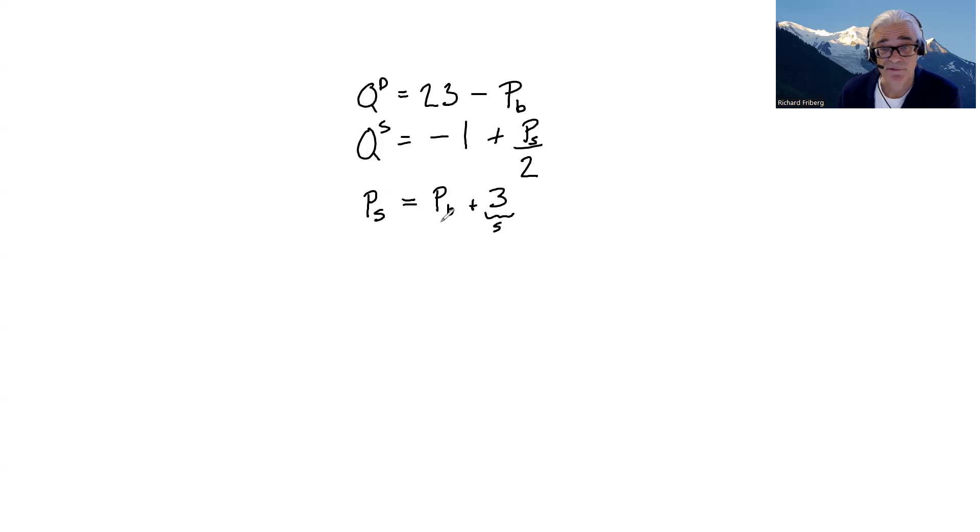If buyers pay 1 euro then suppliers get 4 euros, 1 plus 3. We have a system of equations that we can solve for optimal prices and equilibrium quantities. Let's draw that. Let's illustrate in a graph as usual.